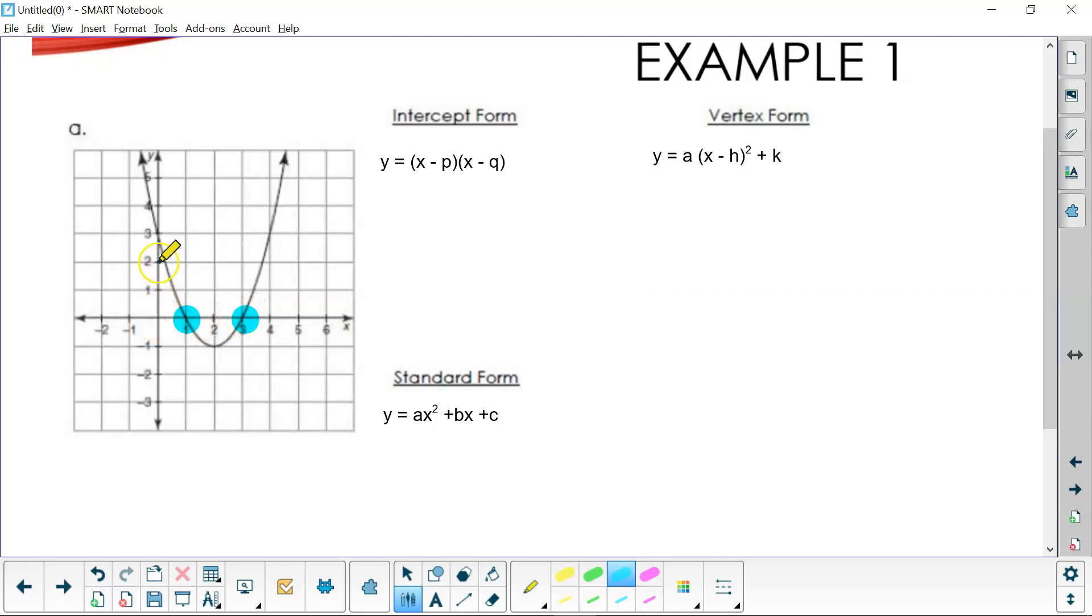Notice that the y value must be zero where this graph crosses the x-axis. The y value is one here, two here, negative one here, negative two here. But right here, the y value is zero. So each of these factors must equal zero. Zero times anything would make y zero.